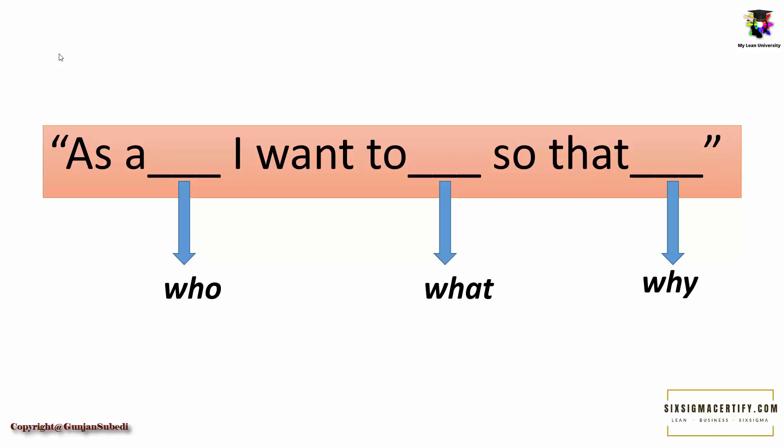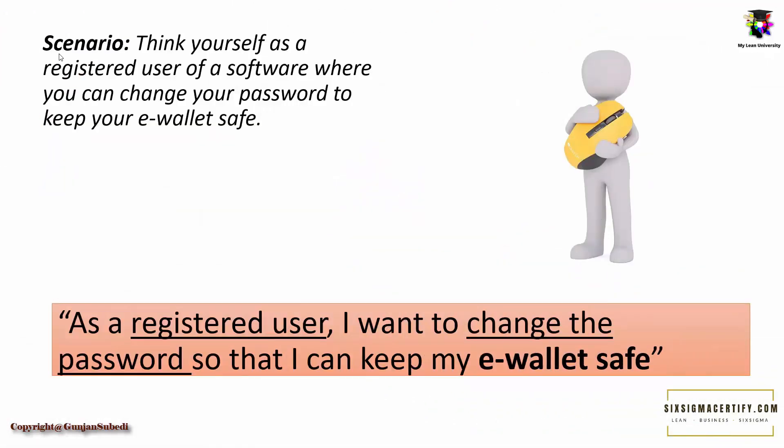Now let's get practical. Let's study with some practical examples to write the user stories. First, let's take the scenario where you are a registered user of a software where you can change your password to keep your e-wallet safe. Following the 3R template, the user story for this scenario could be a statement that answers all the who, what, and why's of the product feature. Here we can write the user story as: 'As a registered user, I want to change the password so that I can keep my e-wallet safe.'